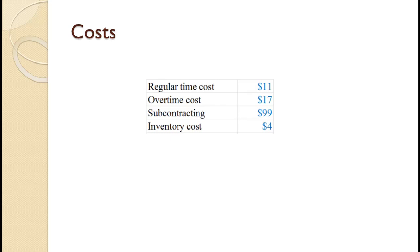The more an item costs to produce, including the material that is not normally included in this analysis, the higher its holding cost. Five, the cost of back ordering one unit for one period is $10.